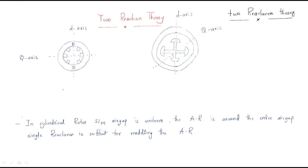To understand these two reactances, first we will look at the two types of rotor construction of the synchronous machine. The first construction is the cylindrical construction — this is the cylindrical rotor and this is the stator. The other construction is the salient pole construction, where the poles have saliency.